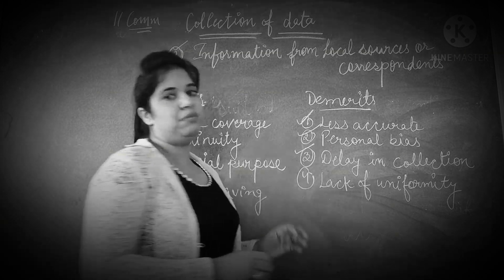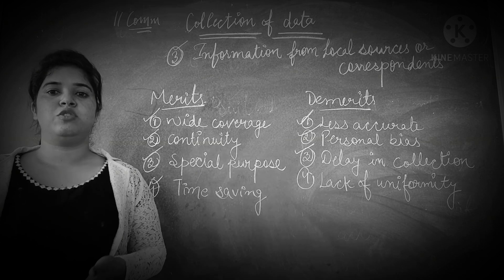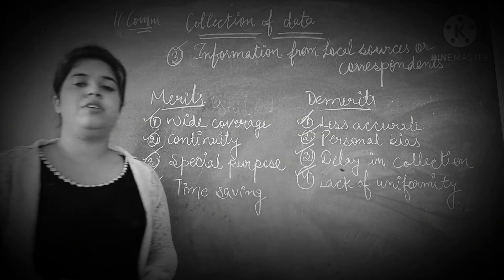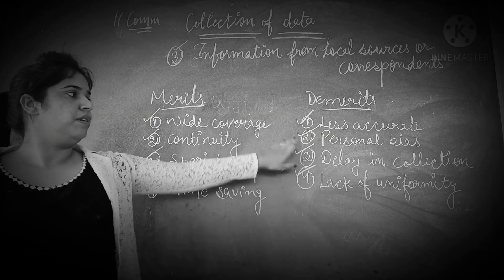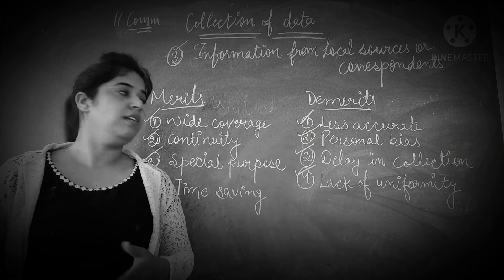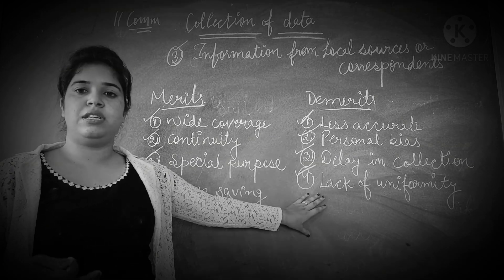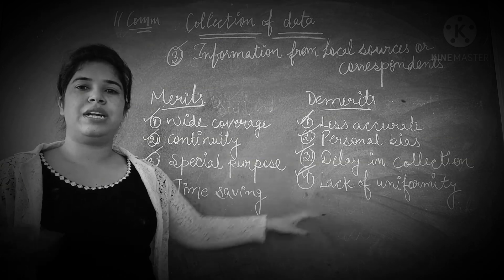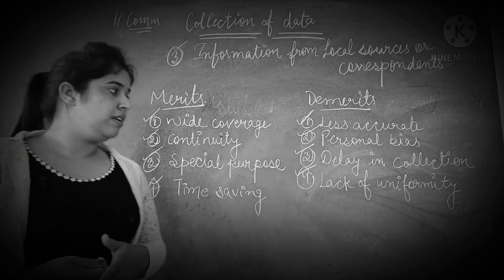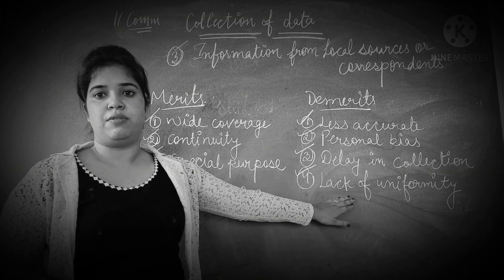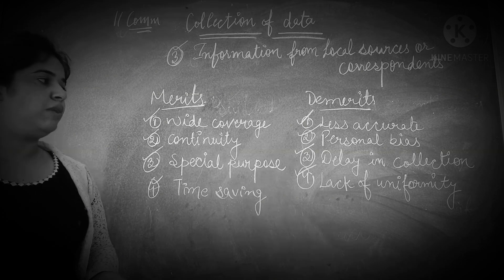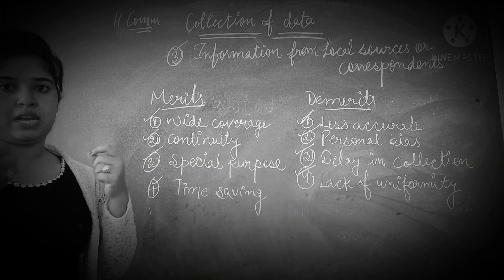Then, delay in submission — because of the large numbers of local persons, there can be a delay in supplying information to the investigators. Lack of uniformity is also present because of the personal bias of the local correspondents. They can use their personal views to collect information, and because there is no direct link between the investigator and the correspondents, there cannot be uniformity of information. Different methods can be used and different information can be delivered.